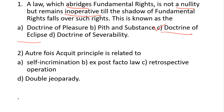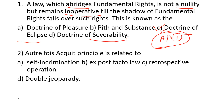The Doctrine of Eclipse is a subtle principle of rule of law that has helped pre-constitutional laws from being wiped out altogether. It applies to pre-constitutional law and directly emanates from Article 13(1). There are two doctrines under Article 13: the Doctrine of Eclipse and the Doctrine of Severability.